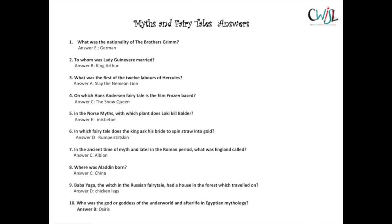Number six: in which fairy tale does the king ask his bride to spin straw into gold? Answer D, Rumpelstiltskin. Number seven: what was England called in ancient myth and the Roman period? Answer C, Albion. Number eight: where was Aladdin born? Answer C, China. Number nine: Baba Yaga's house travelled on answer D, chicken legs. Number ten: the god or goddess of the underworld in Egyptian mythology — answer B, Osiris.